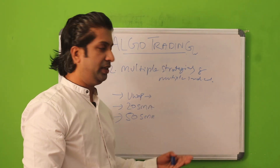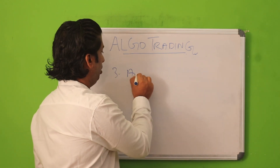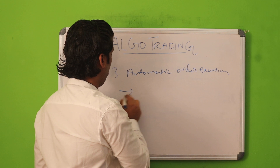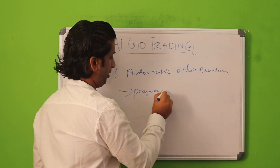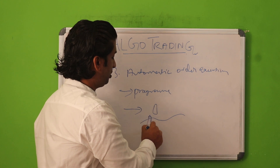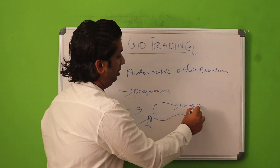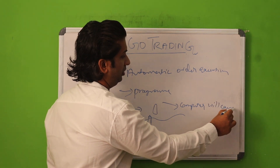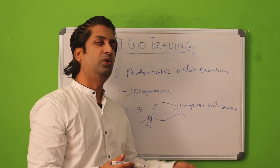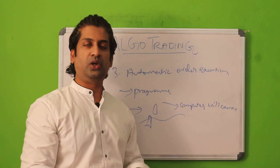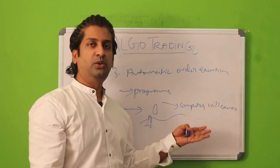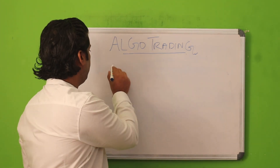The third benefit is automatic order execution. If you have given one program — for example, if the candle closes above the VWAP — the computer will execute the order automatically. You don't have to go to the login page of your broker, you don't have to log in, go to the stock, select buy, and execute the order, because the computer will do it for you. That is how algo trading works.